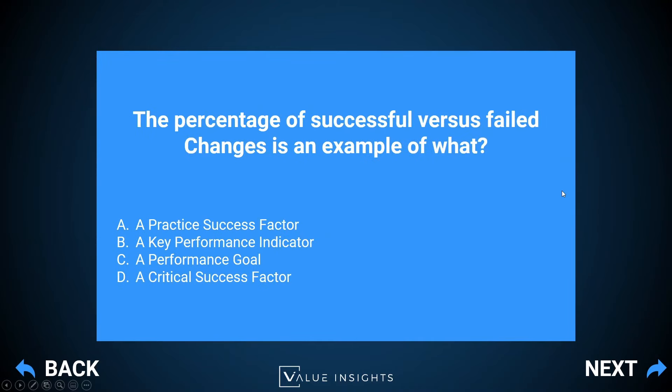Question number six: the percentage of successful versus failed changes is an example of what? The correct answer is B — it is a key performance indicator, or KPI. It is a typical metric that helps us measure how well our practices are actually working. Option A — a practice success factor — is more of an overarching goal a practice needs to achieve, not an individual metric. Option C — a performance goal — is not even defined in ITIL in that way. Option D — a critical success factor — is the old name for practice success factors. So the correct answer here is KPI.